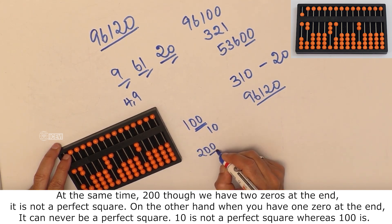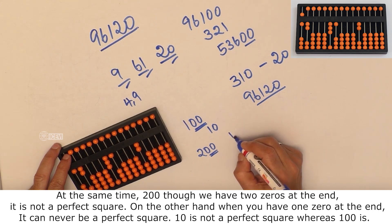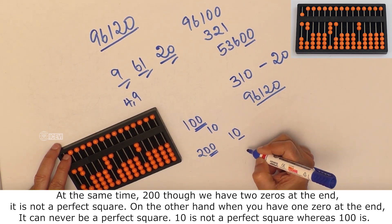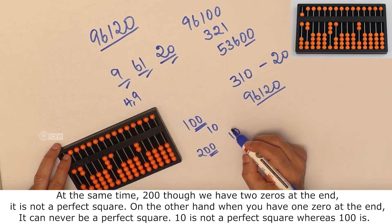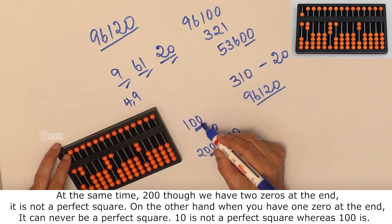though we have two zeros at the end, is not a perfect square. On the other hand, when you have one zero at the end, it can never be a perfect square. 10 is not a perfect square, whereas 100 is a perfect square.